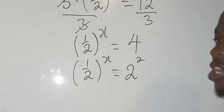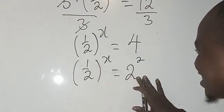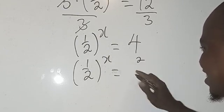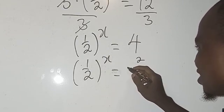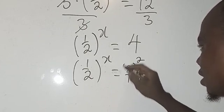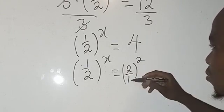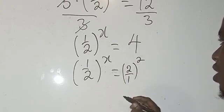Let me do something here, something very beautiful. If I have 2, ordinarily 2 is 2/1. I can write 2 as 2/1 because 2 raised to power 2 gives us 4, and 1 raised to power 2 gives 1, so we have 2/1.